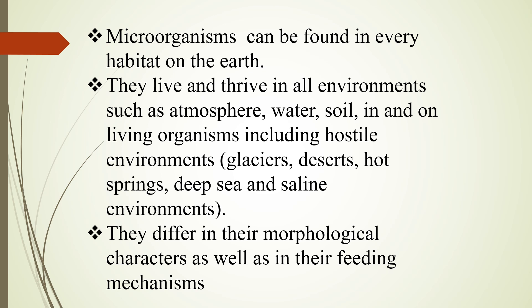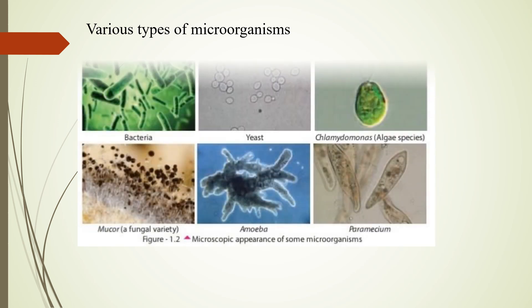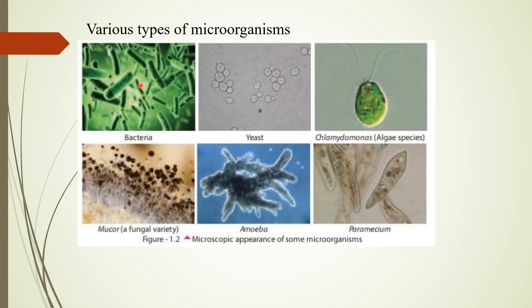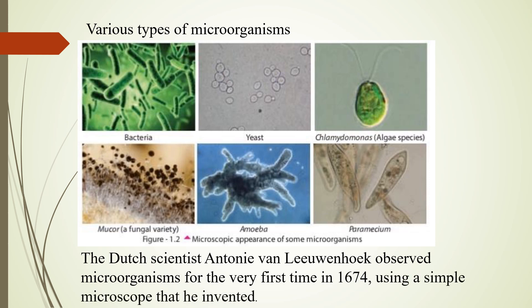They differ in their morphological characters as well as in their feeding mechanisms, so there are various types of microorganisms in our environment. These are called bacteria, yeast, chlamydomonas — a type of algae — mucor — a type of fungi — amoeba, and paramecium. The Dutch scientist Antony van Leeuwenhoek observed microorganisms for the very first time in 1674 using a simple microscope that he invented.